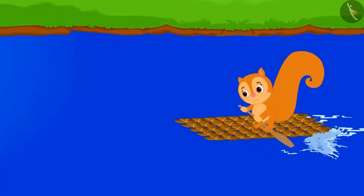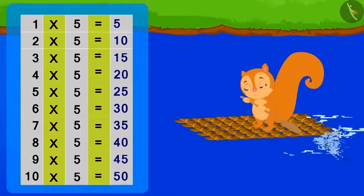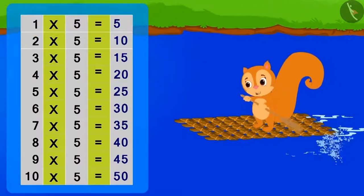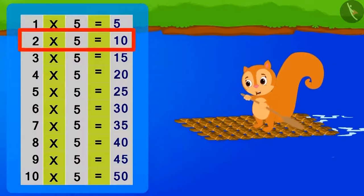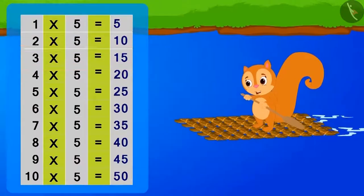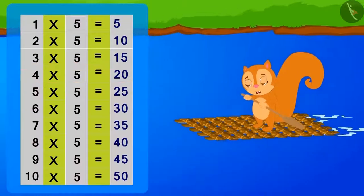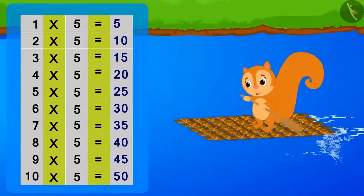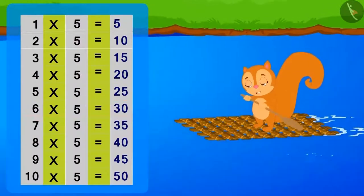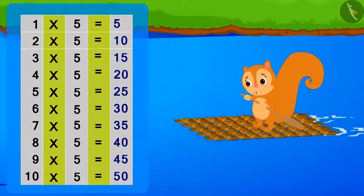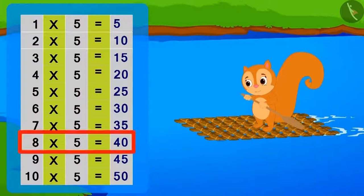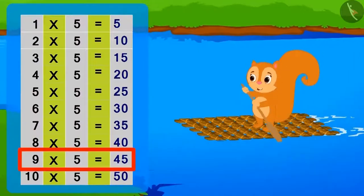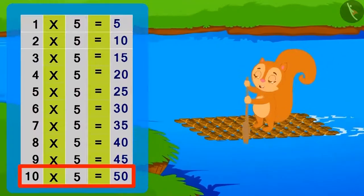Chanda was humming the table of 5 while sailing in her boat. 5 ones are 5, 5 twos are 10, 5 threes are 15, 5 fours are 20, 5 fives are 25, 5 sixes are 30, 5 sevens are 35, 5 eights are 40, 5 nines are 45, 5 tens are 50.